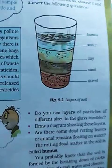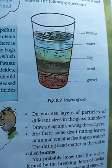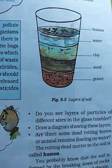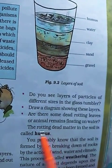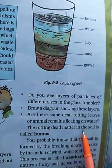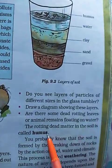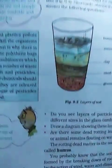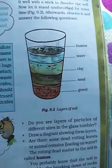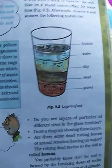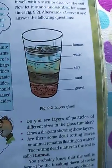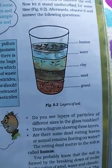This rotten, dead plant and animal material is known as humus. Underline the statement: the rotting dead material present in the soil is called humus. Humus is the dead material of plants and animals which rots and gets mixed up with the soil, thus increasing the fertility of the soil.